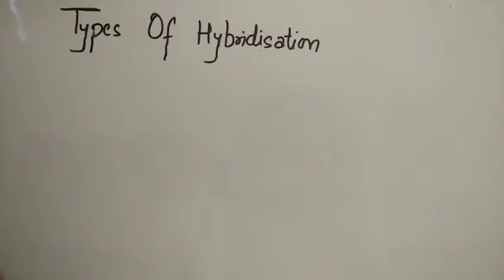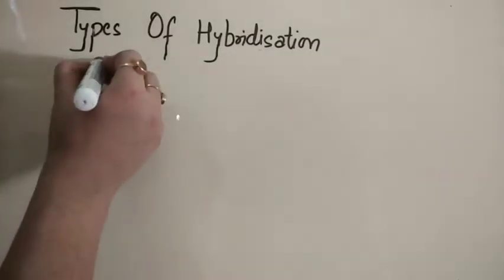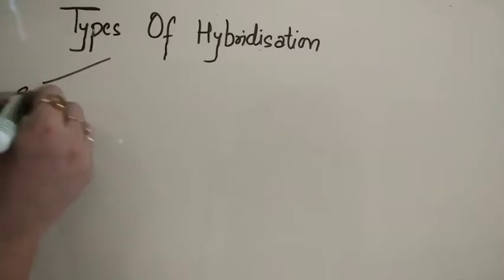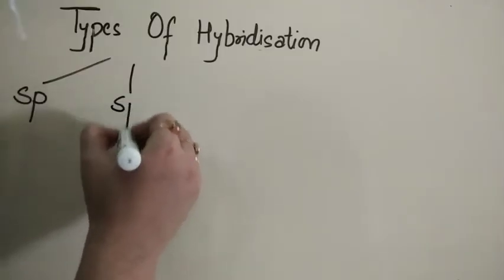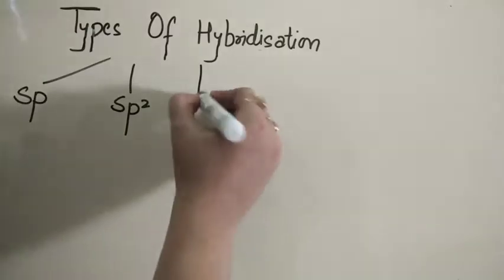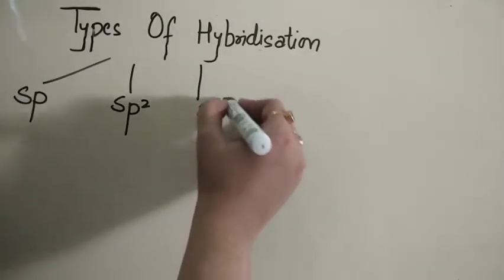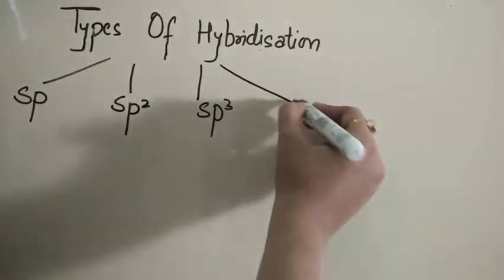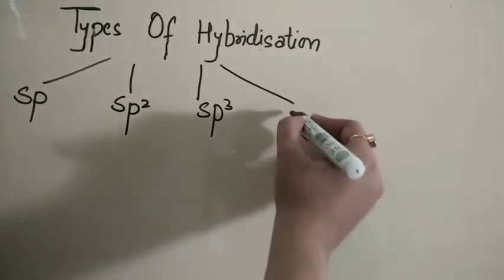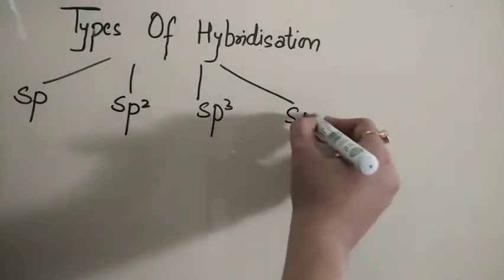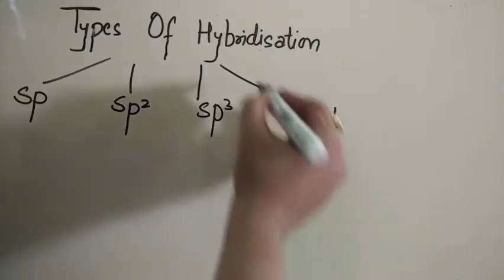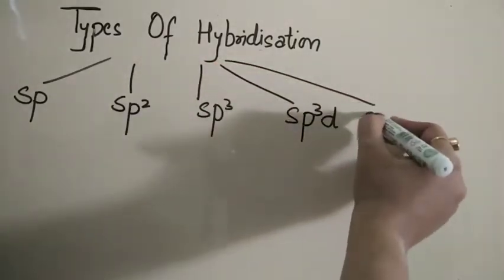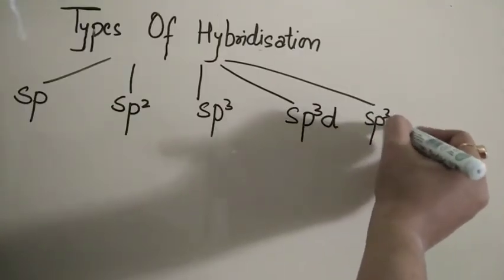Next, the types of hybridization: when s and p orbitals intermix, they form sp hybridization; when 2 p orbitals are involved, sp2; when 3 p orbitals, sp3; when s, p, and d orbitals overlap, it is sp3d; and if 2 d orbitals overlap, it is sp3d2.